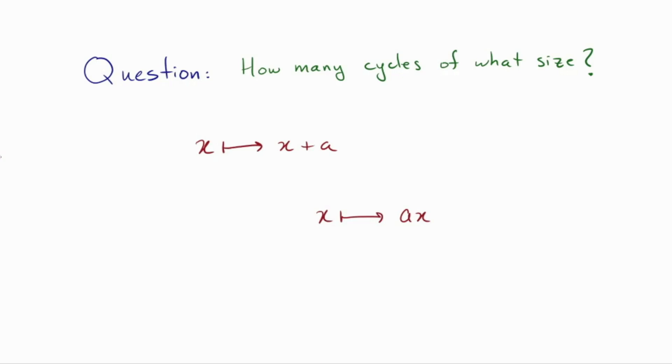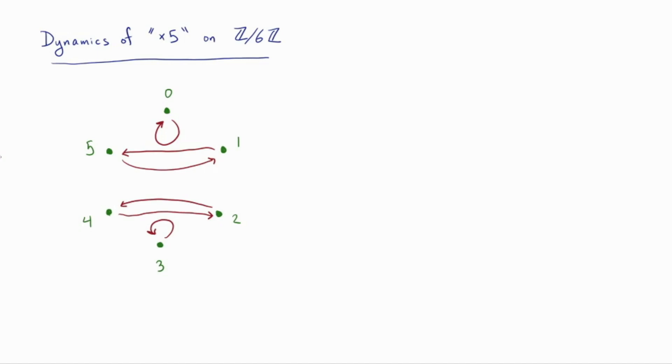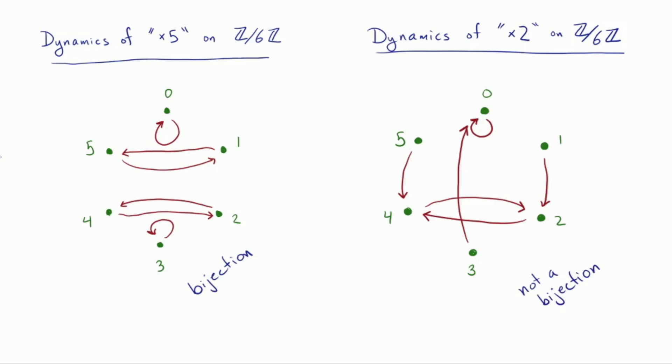This is the dynamics of times five on Z mod six Z. Zero when you multiply it by five is zero. One when you multiply it by five is five, but five when multiplied by five is 25, which is one more than a multiple of six. So that goes to one and so on. So we get this. And now you notice we have different size cycles, several different cycles. So that's already looking kind of interesting. But now get a look at this one. If we do the dynamics of times two on Z mod six Z, then everything looks like it goes crazy. In fact, we don't have cycles. So looking at this from what we've learned already, we can see that in fact, this isn't even bijective. So this is actually doing something very different. This one is a bijection. This one is not a bijection. So there's definitely a lot of interesting structure to describe when we look at the dynamics of multiplication.